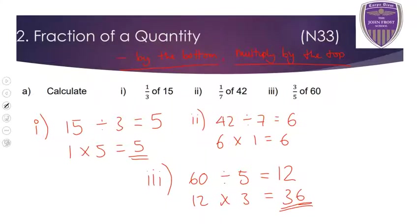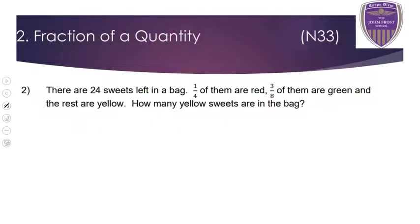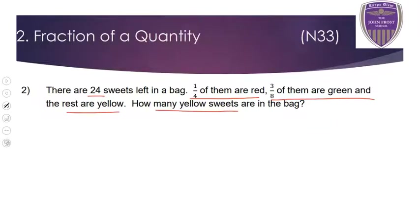This time the top number makes a difference because there's more than 1 on the top — the answer is not 12, that would only be 1 fifth of 60. We want 3 fifths, so we times that number by 3. Now for the wordy type question: there are 24 sweets left in the bag, one quarter of them are red, three eighths of them are green, and the rest are yellow. The question asks how many yellow sweets there are.